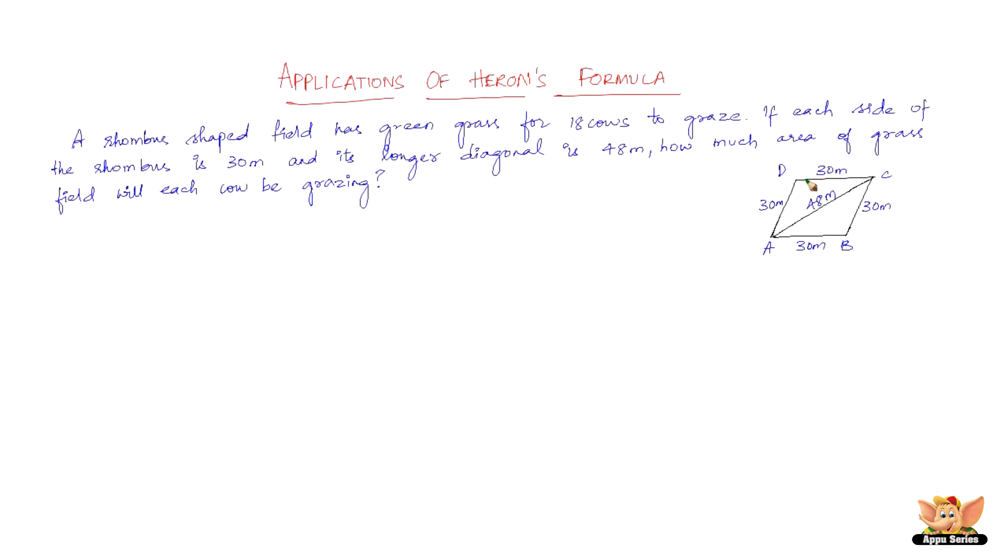So here we have a rhombus, a rhombus is a figure which is four sided with equal sides. The only way it differs with a square is its angles are not at right angles. So we've got all the data here as far as Heron's formula is concerned. I mean we've got two triangles here if you can see.